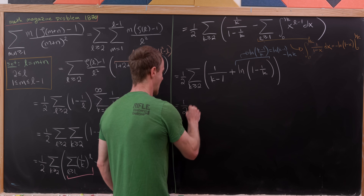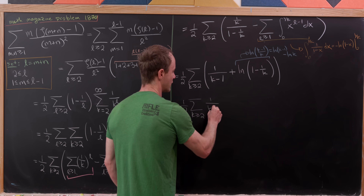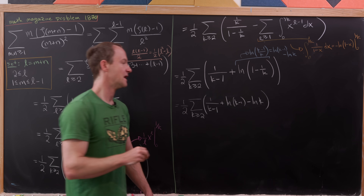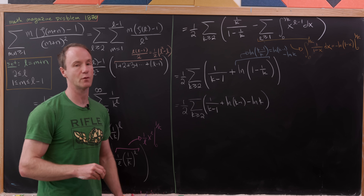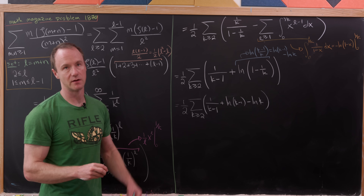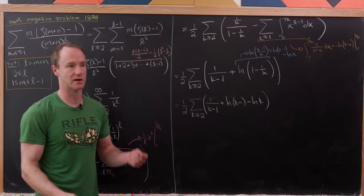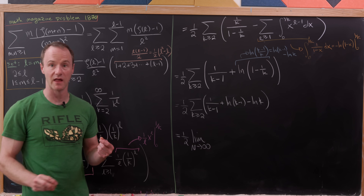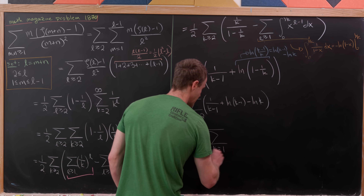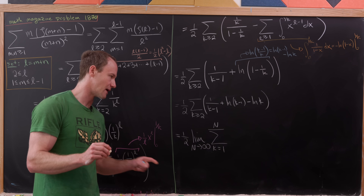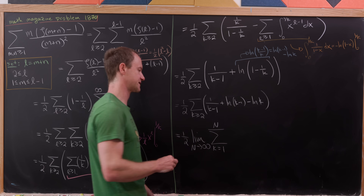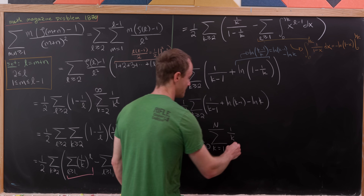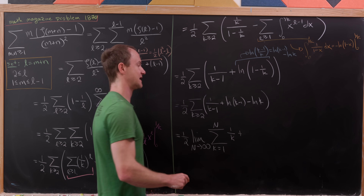Bringing everything down: one half times the sum as k is bigger than or equal to 2 of 1 over k minus 1, plus natural log of k minus 1 minus natural log of k. Re-indexing k down by 1 to start at 1 (replacing k with k plus 1) and converting to a limit of partial sums, we get one half times the limit as N goes to infinity of the sum from k equals 1 to N of 1 over k, plus natural log of k minus natural log of k plus 1.